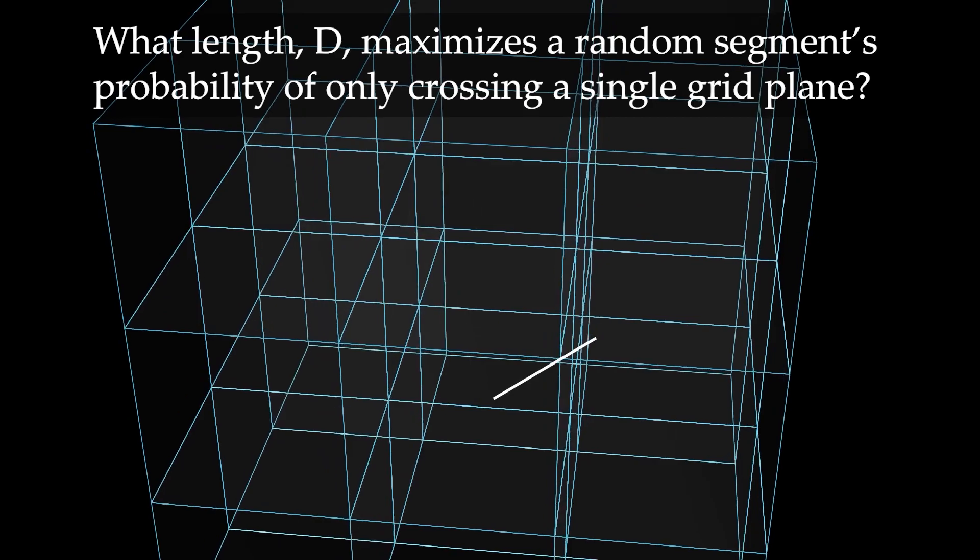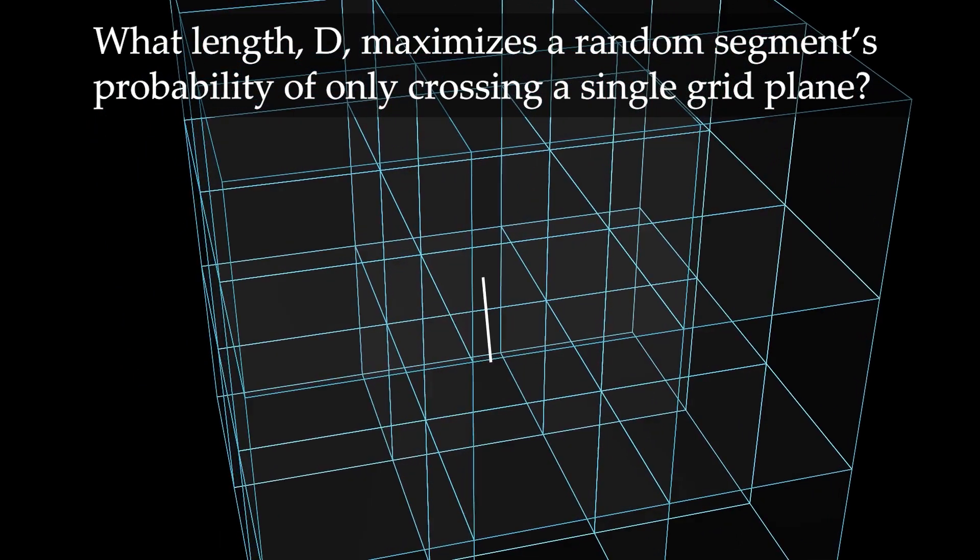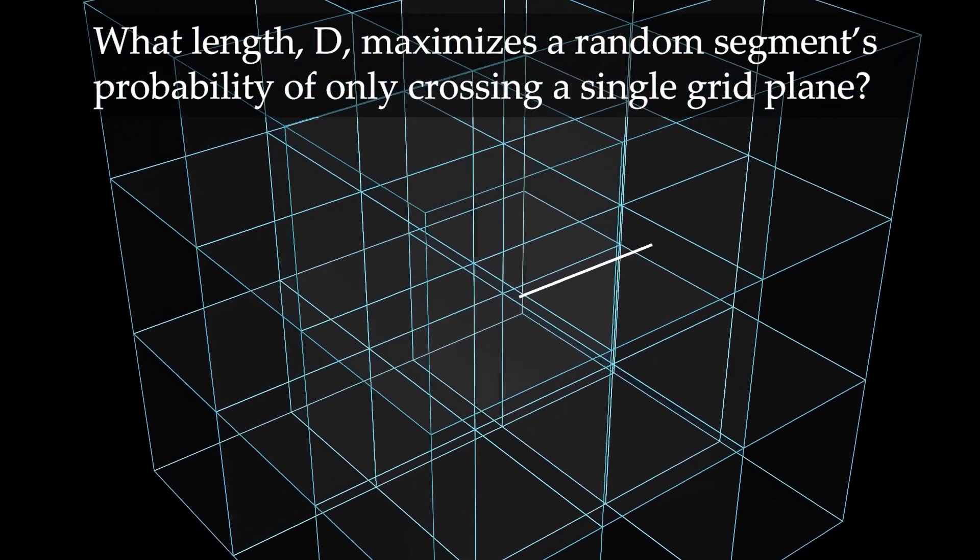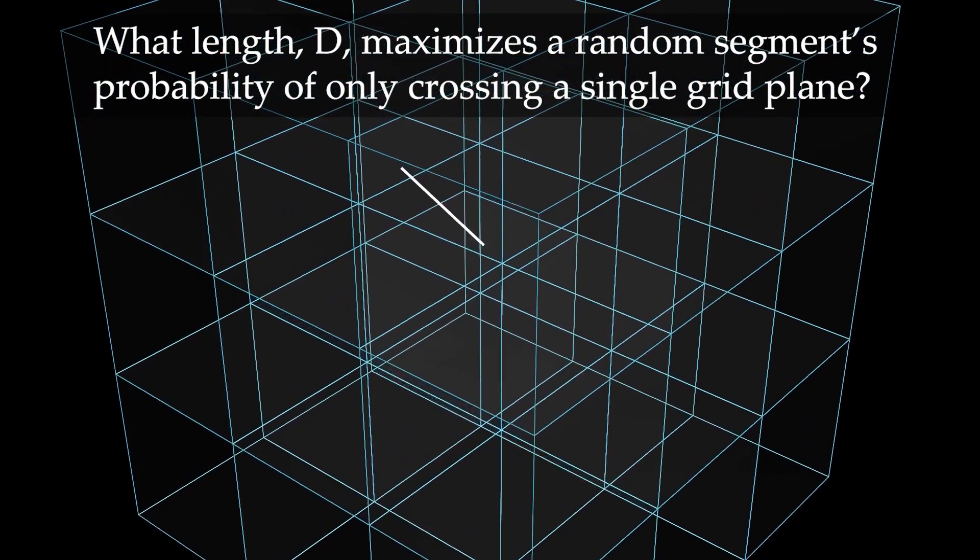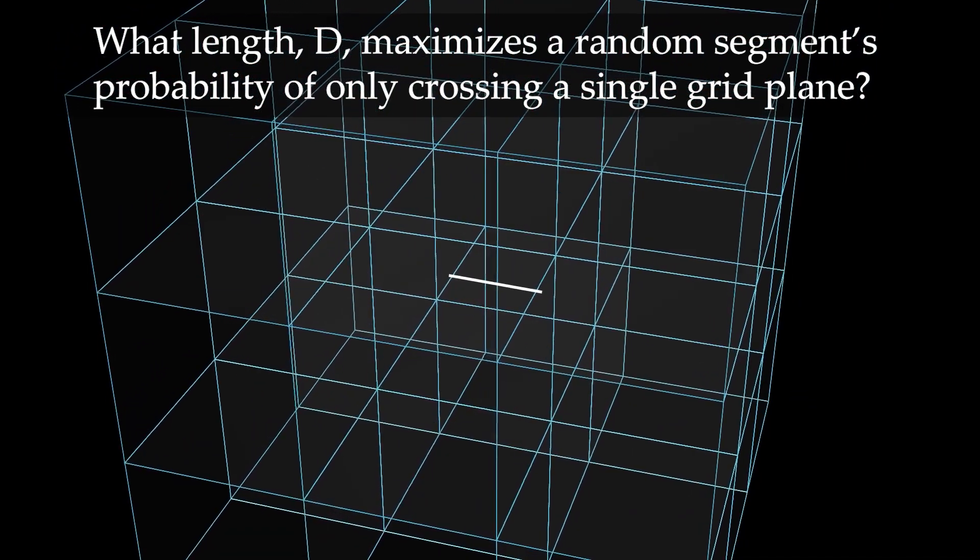That is to say, we are maximizing the probability that one end of the random segment is in the center cube and the other is in an orthogonally adjacent one. Once we have the optimal length, we will also calculate the maximum percentage of having a single cross.